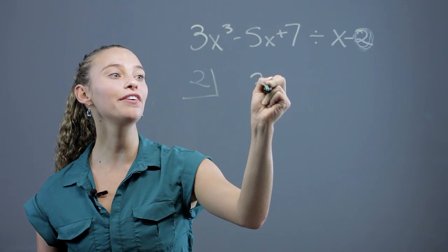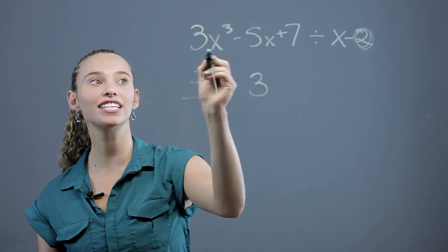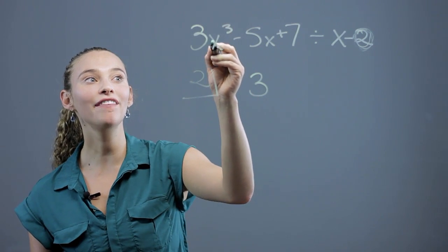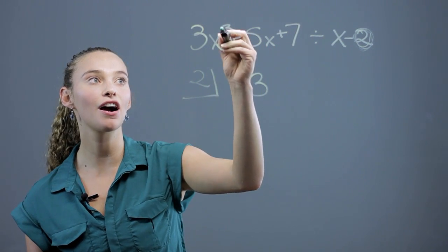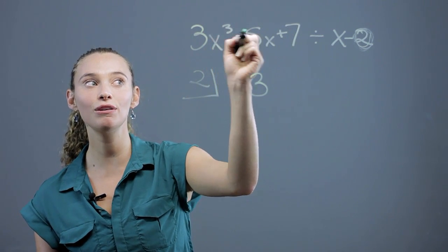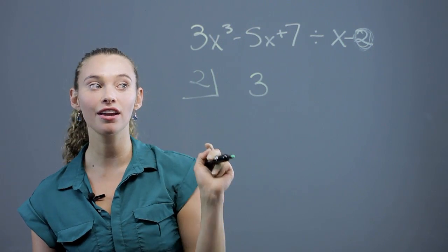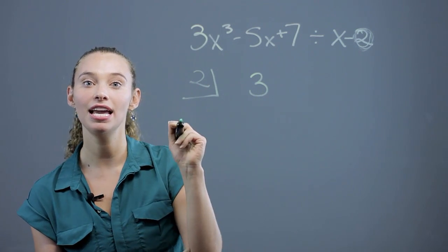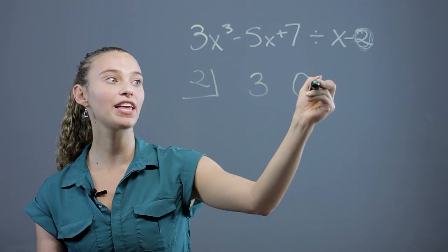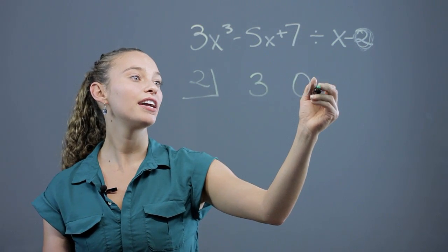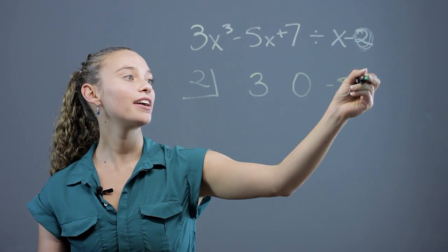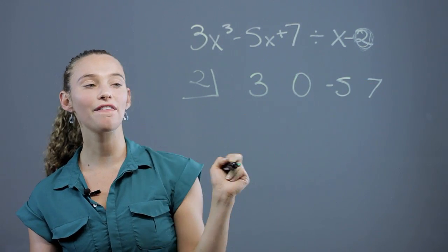Then, we line up the other numbers that are the coefficients from this problem. The tricky thing to remember here is that you have to do it in descending order of exponents, and if you skip an exponent, like here, it goes from x cubed to x to the 1, there's no x squared. So we have to put a 0 in that place because there's no x to the 2nd power. The next number is negative 5, and the next number is 7. So we have all the coefficients.